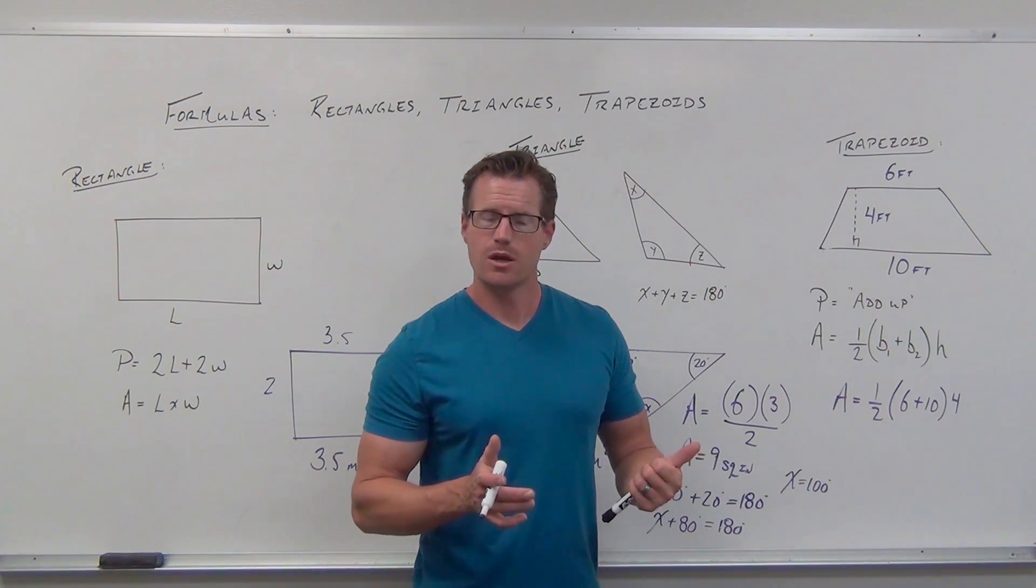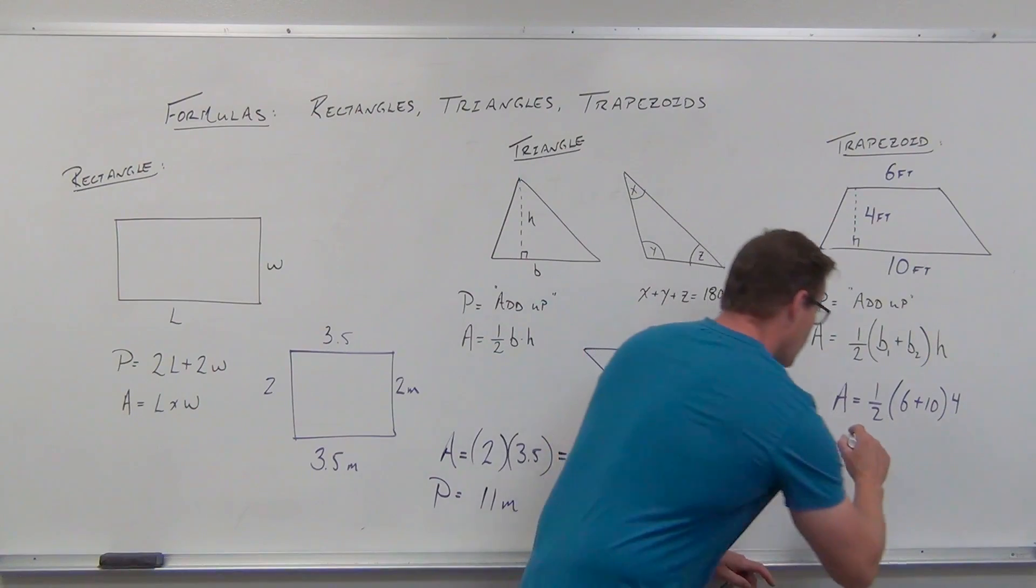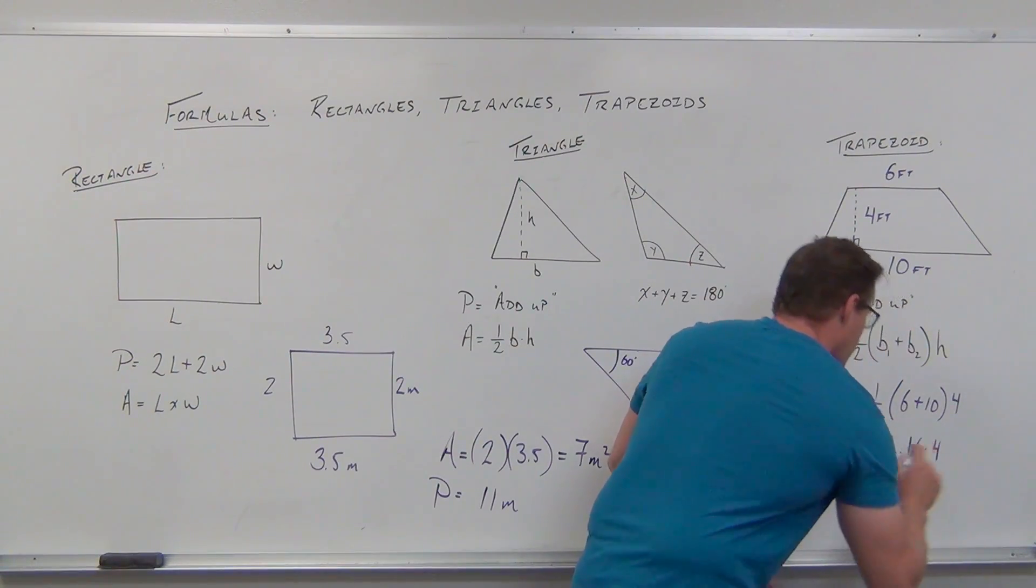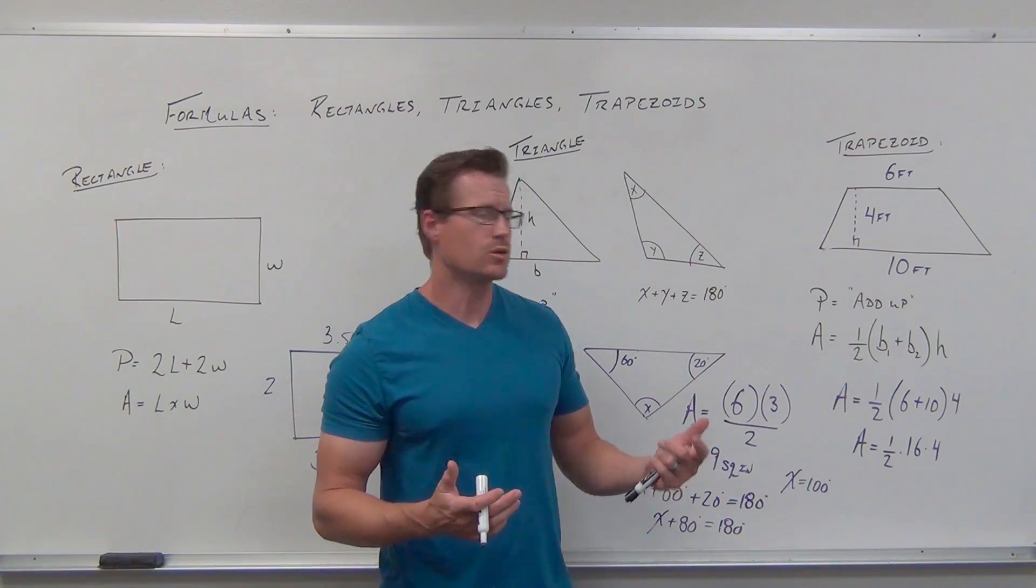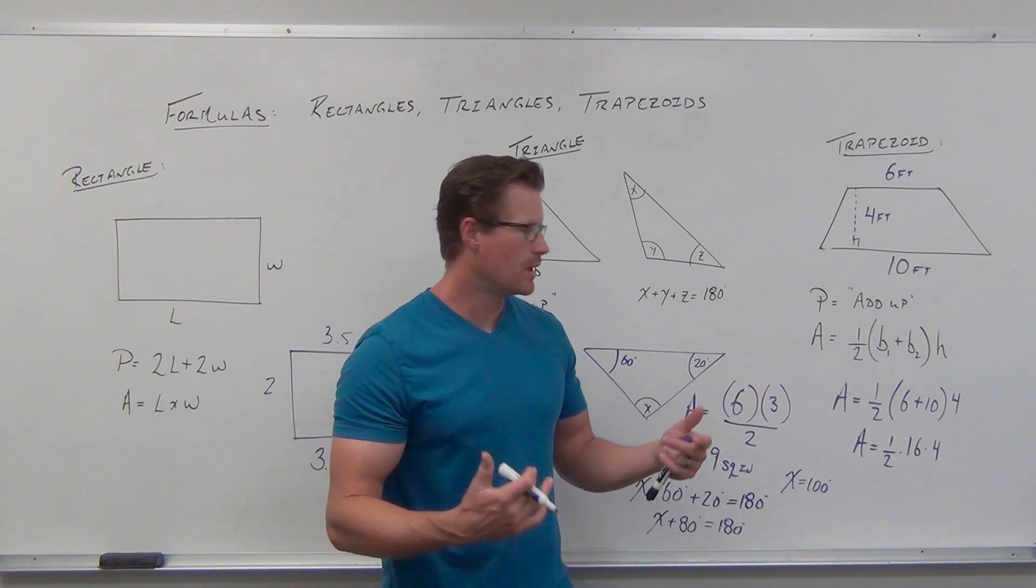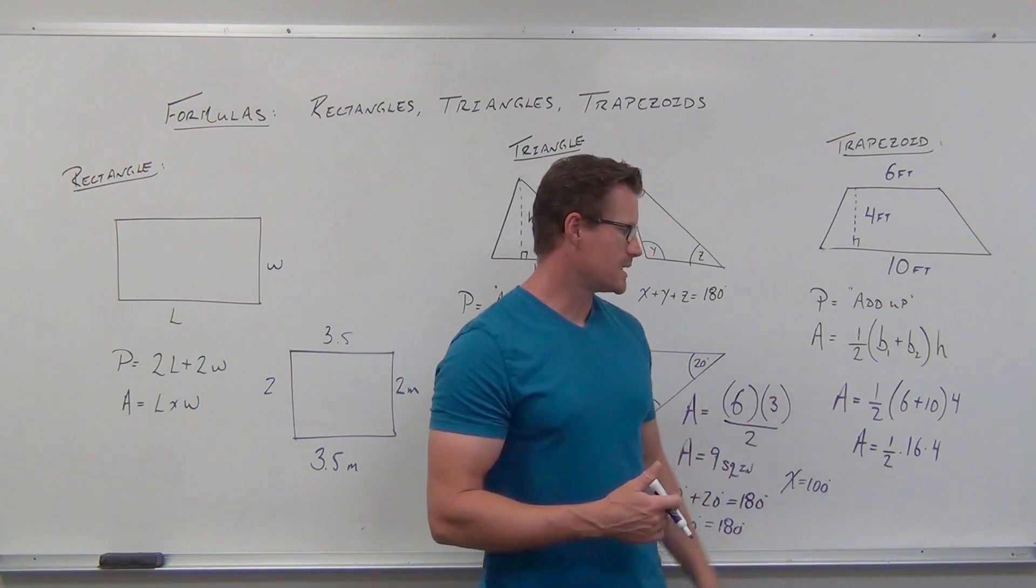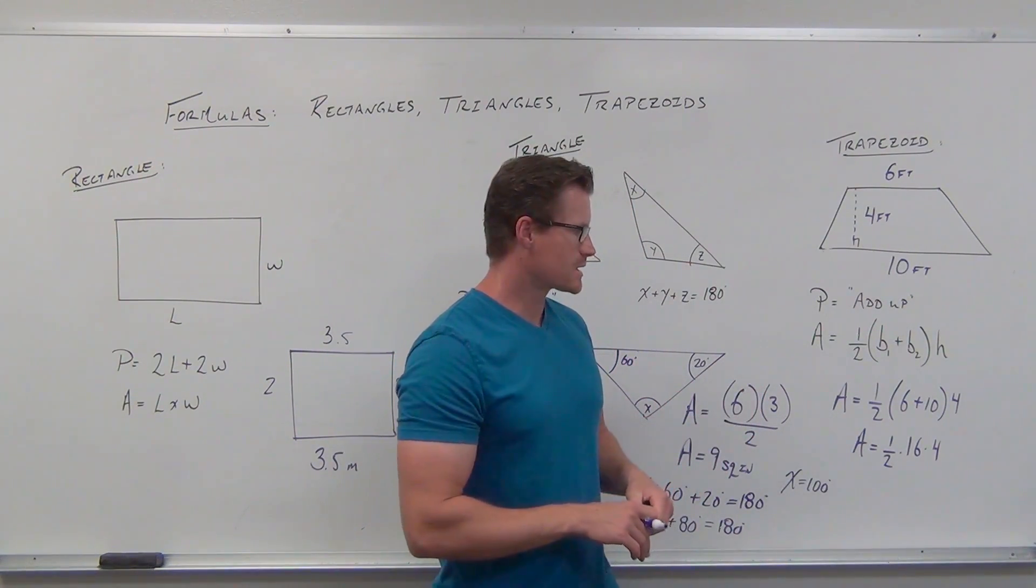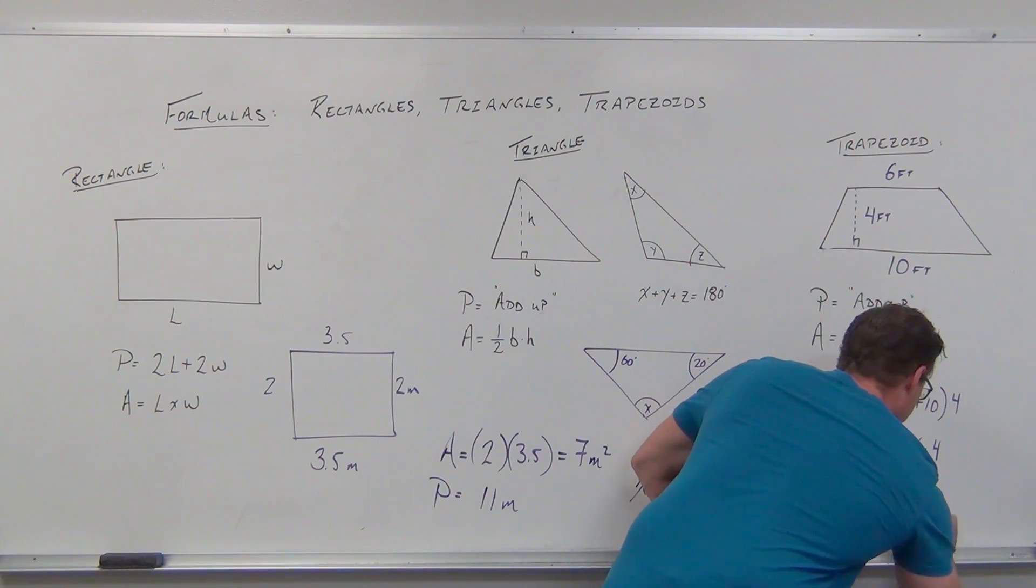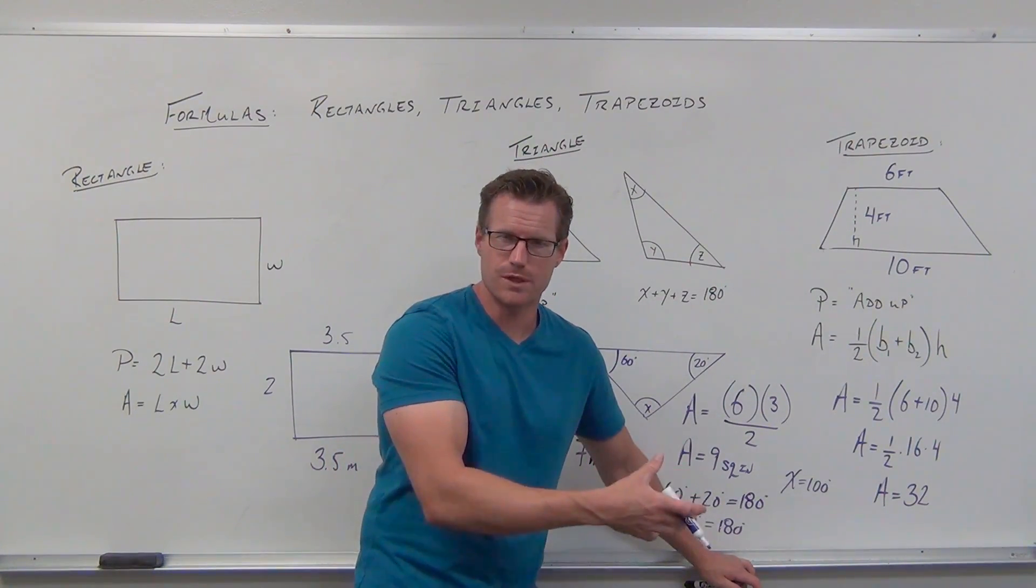Don't forget order of operations - parentheses first. Six plus ten gives 16. Then multiply: 1/2 × 16 × 4. Because of commutativity and associativity, you can multiply in any order. Let's do 1/2 × 16 = 8, then 8 × 4 = 32. Or do 16 × 4 = 64, then 64 ÷ 2 = 32. Either way, our area is 32 square feet.